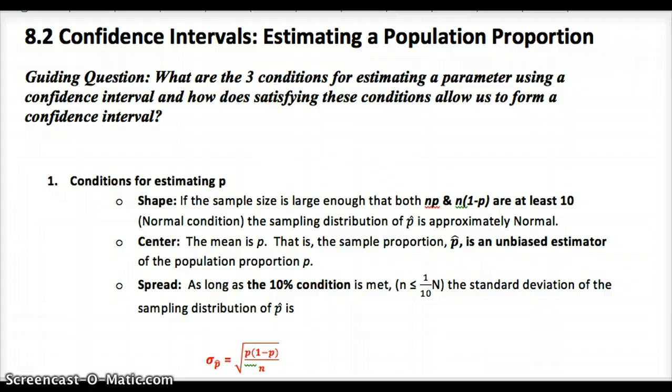I want you to keep in mind: what are the three conditions for estimating a parameter using a confidence interval and how does satisfying each of those conditions allow us to form a confidence interval? What do the conditions mean in terms of the problem? Why are they conditions? If you can answer that, it'll be a lot easier to understand and remember them.